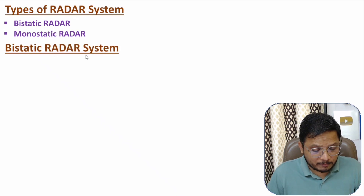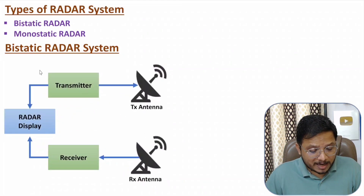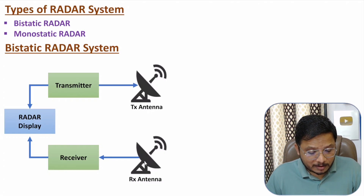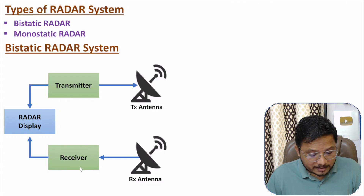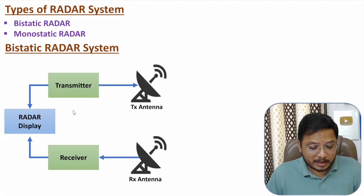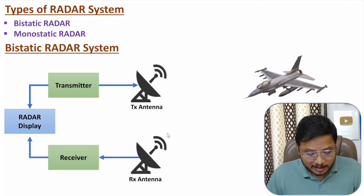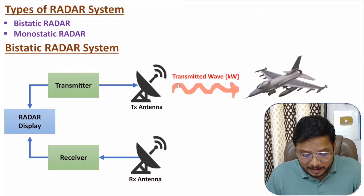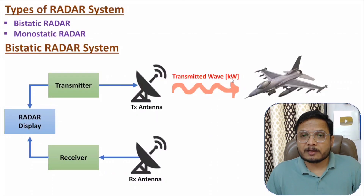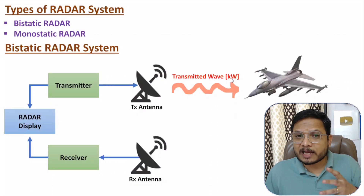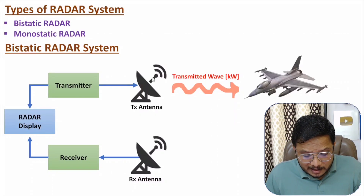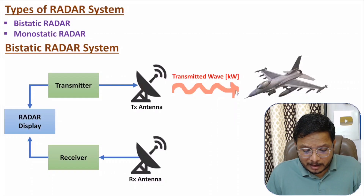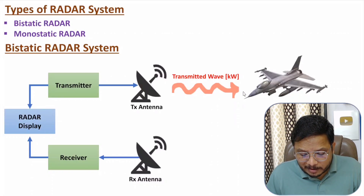First I'll explain the bistatic radar system. If you observe the block diagram of bistatic radar system, here we have a transmitter section and here we have a receiver section. The transmitter section has a transmitter and transmitting antenna, and the receiver section has a receiver and receiving antenna. The transmitter antenna is transmitting very high power — in terms of kilo volts, sometimes even mega volts.